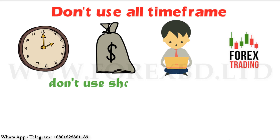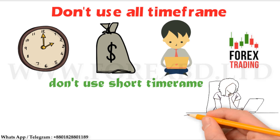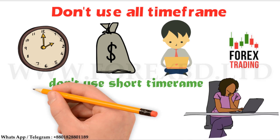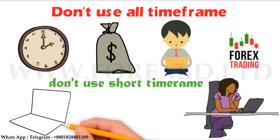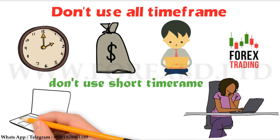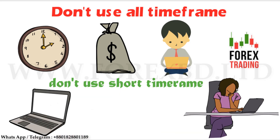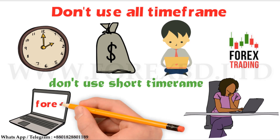Beginners should never trade in such short time frames as one minute or five minutes, because these have more movement and support and resistance don't work well. Many traders trade by looking at support and resistance and set their SL and TP, but support and resistance don't give much feedback in short time frames. Always try to trade in the one-hour or four-hour time frame.